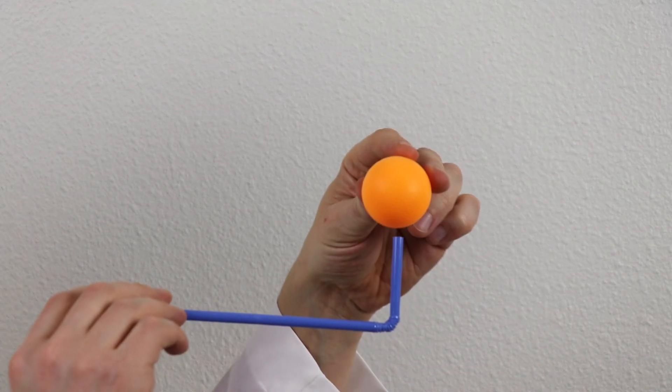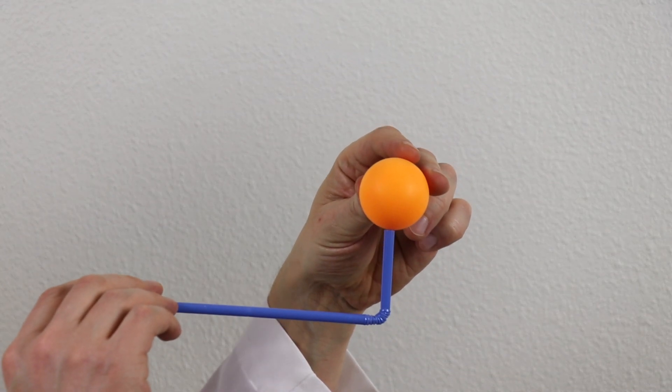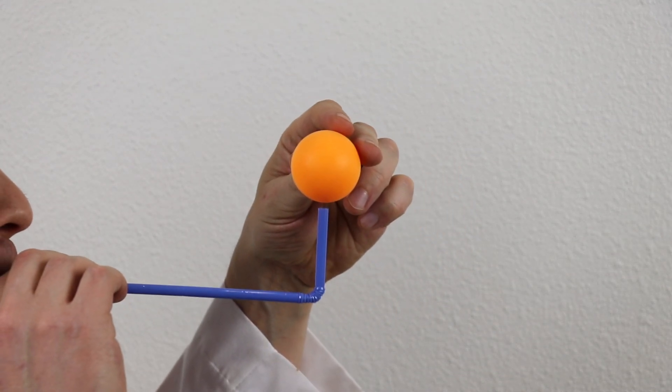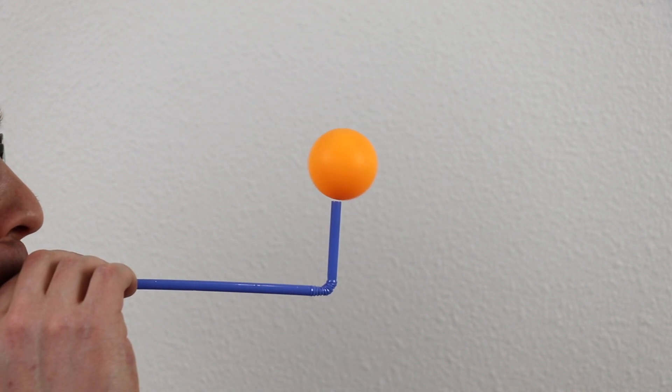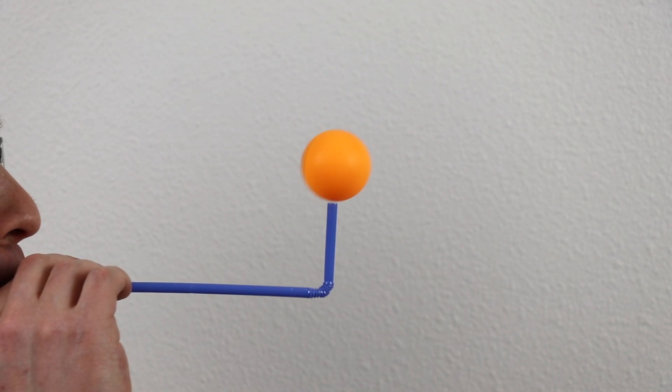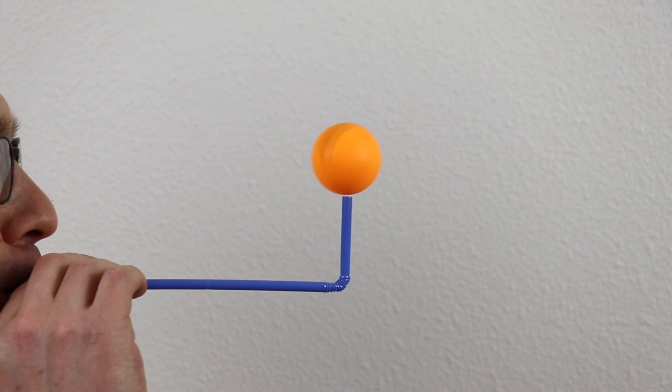For the next trick you will need a plastic straw and a pin-point ball. What you want to do is place a pin-point ball on the straw and blow into it. Like this.